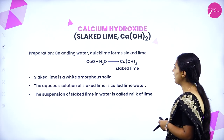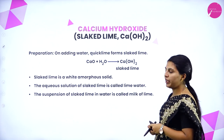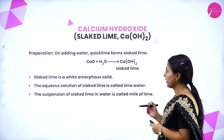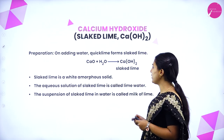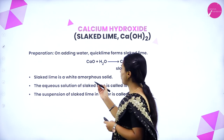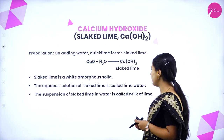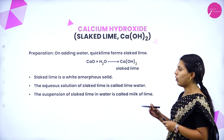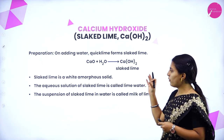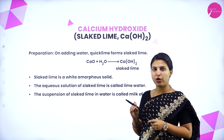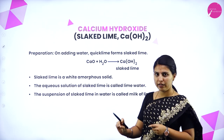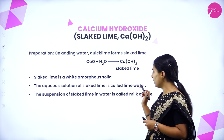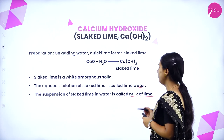First, calcium hydroxide, that is slaked lime. How is it prepared? On adding water to quick lime, slaked lime is formed. Calcium oxide when treated with water forms slaked lime. Slaked lime is a white amorphous solid. The aqueous solution of slaked lime is called lime water, and the suspension of slaked lime in water is called milk of lime.